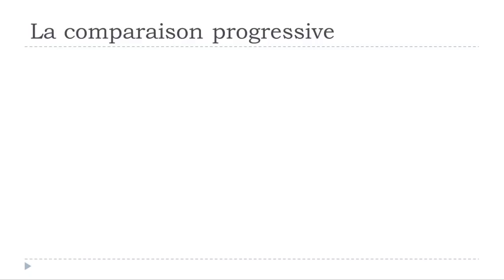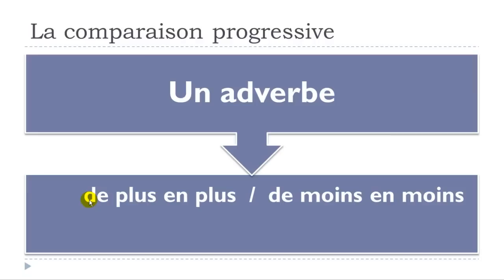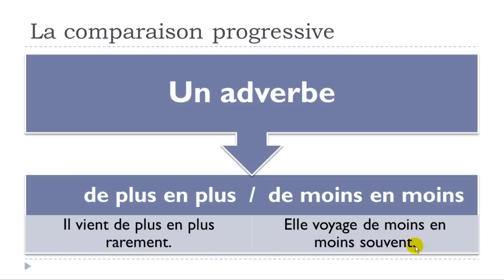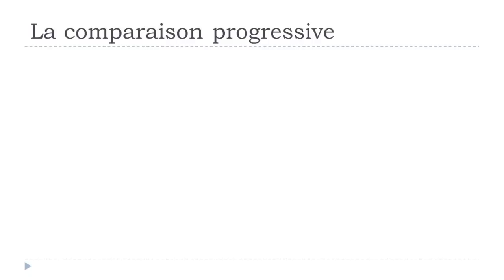For adverbs it's the same structure: IL VIENT DE PLUS EN PLUS RAREMENT — he comes more and more rarely. ELLE VOYAGE DE MOINS EN MOINS SOUVENT — she travels less and less often. You put DE PLUS EN PLUS or DE MOINS EN MOINS before your adverb.